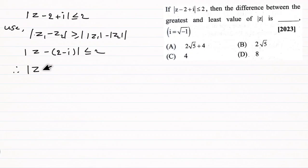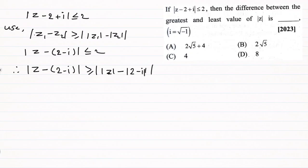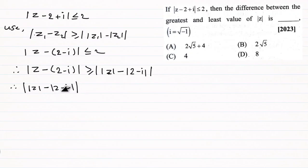Therefore, modulus of (z minus (2 minus i)) is greater than or equal to the absolute value of modulus of z minus modulus of (2 minus i). So modulus of z minus modulus of (2 minus i) is less than or equal to modulus of (z minus (2 minus i)), which is less than or equal to 2.